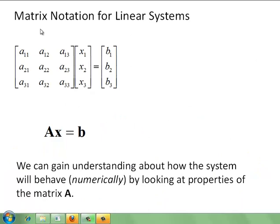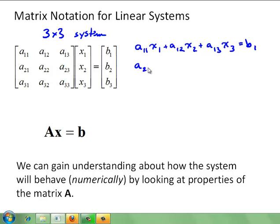Matrix notation provides a compact way to represent linear systems of equation. So we can look here. Here is a 3 by 3 system. And we can see how by applying the definition of matrix multiplication. So going across the row and down the column, we have a11 times x1 plus a12 times x2 plus a13 times x3 equals b1. a21 times x1 plus a22 times x2 plus a23 times x3 equals b2.